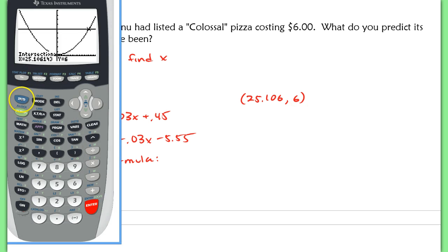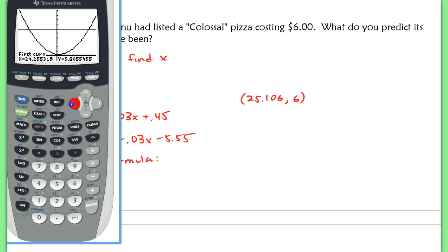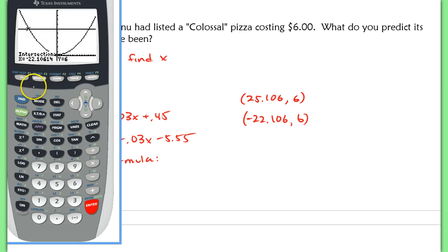And to find the other one, we're going to go 2nd calc again and intersect one more time. And this time, I'm going to scroll closer to the other intersection. It'll ask me first curve and second curve. I'm just going to hit enter, enter. And then when it asks me to guess, just hit enter one more time. And we get another one at negative 22.106, 6. So another one at (-22.106, 6).